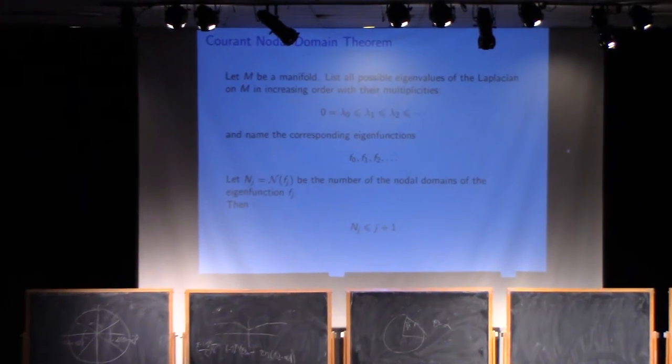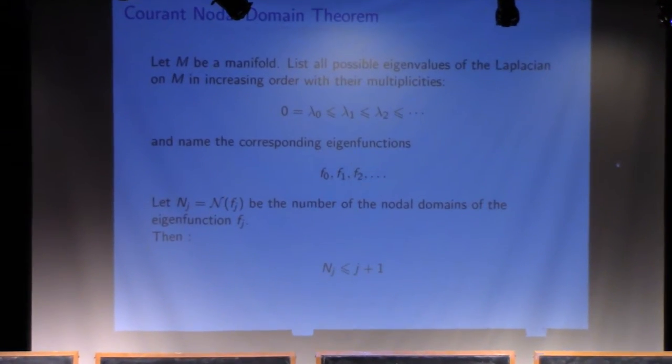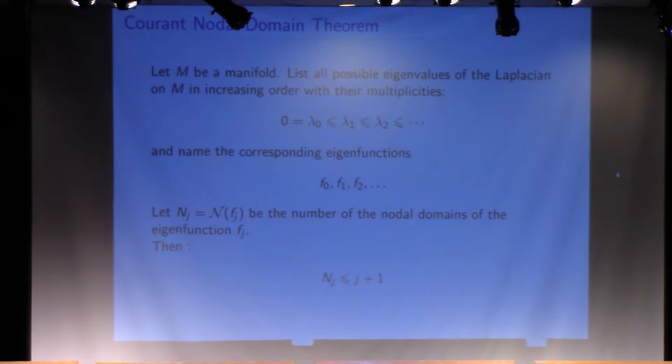The theorem that we use as the jumping off point is the Courant nodal domain theorem, which was formulated by Courant in the 1920s. It says that if we're given a manifold, we can list all the possible eigenvalues of the Laplacian in increasing order with multiplicities.